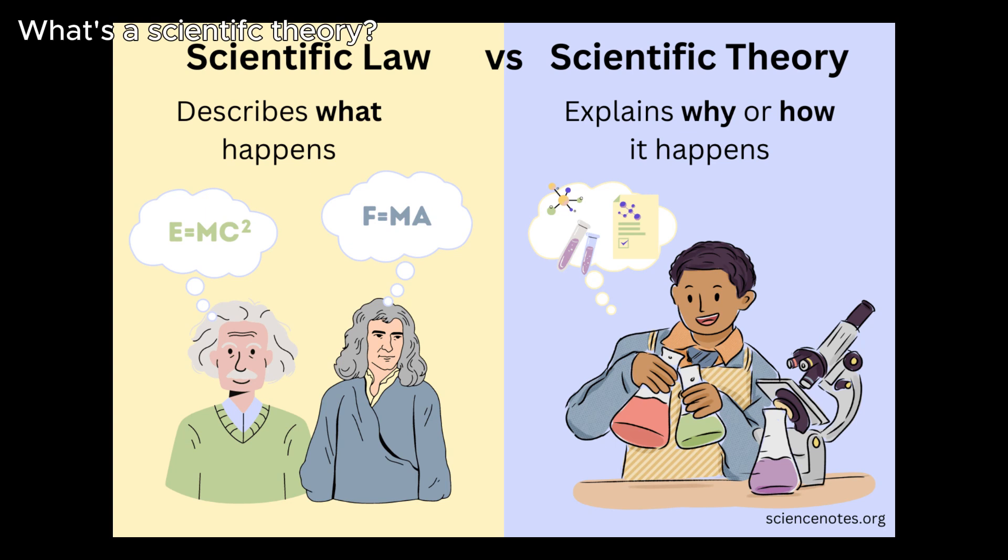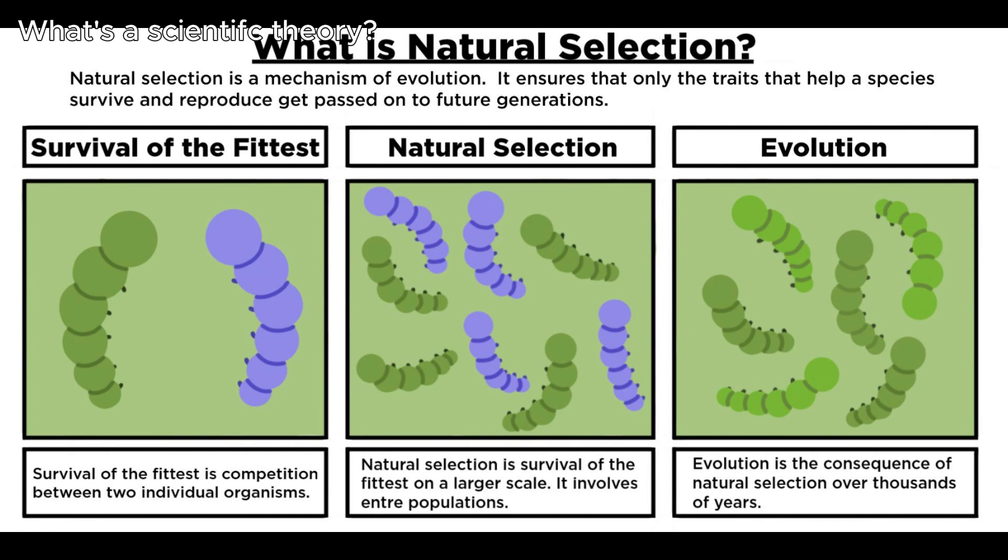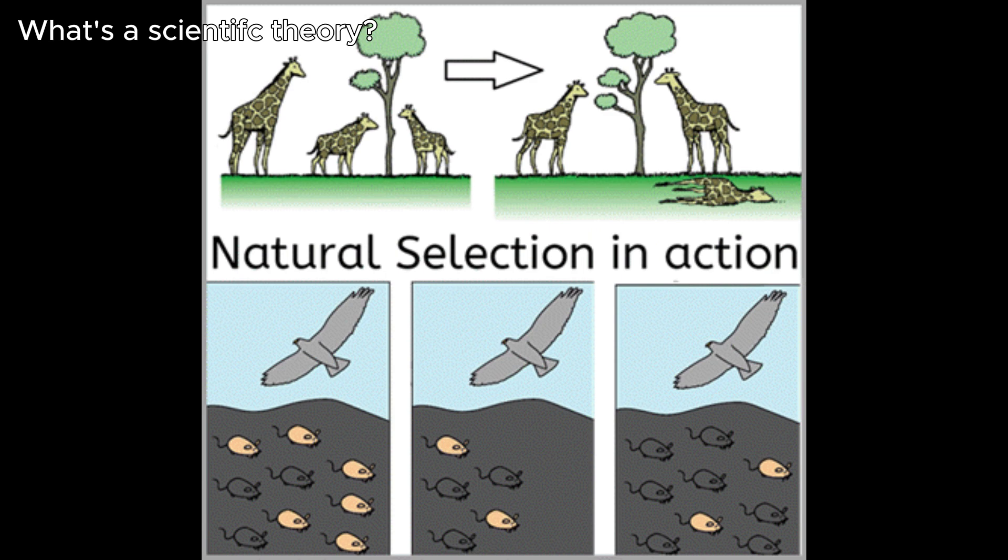So when people say the theory of evolution, they really mean the theory of natural selection, which is the mechanism for evolution. It's called the survival of the fittest. The fittest ones in their environments survive, they pass down their genes, and the ones who die unfortunately don't get to pass on their genes, and their lineage goes extinct.